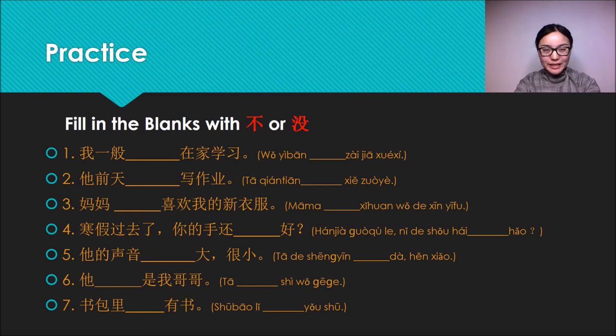First one, we use 不. Yes! 我一般不在家学习 (Generally speaking, I don't study at home). This sentence is about a general state, so we use 不 to negate.